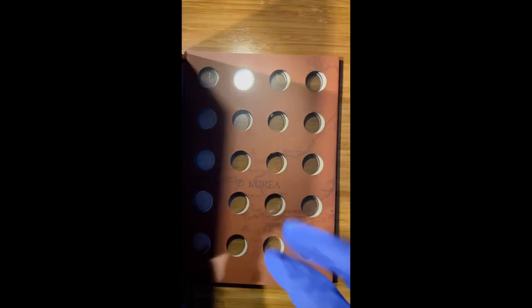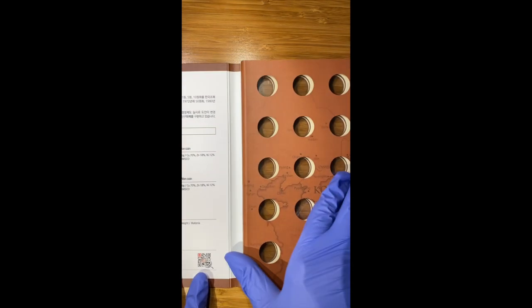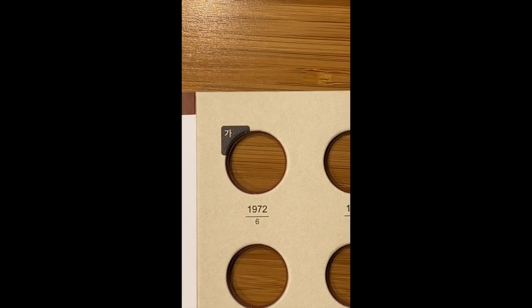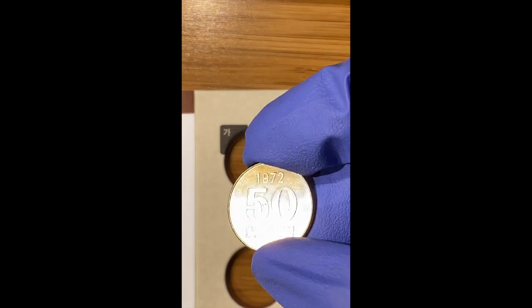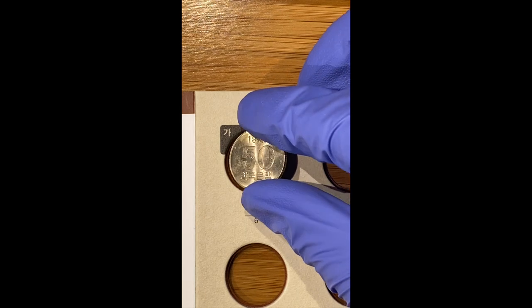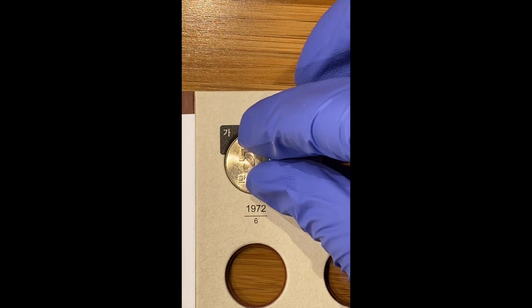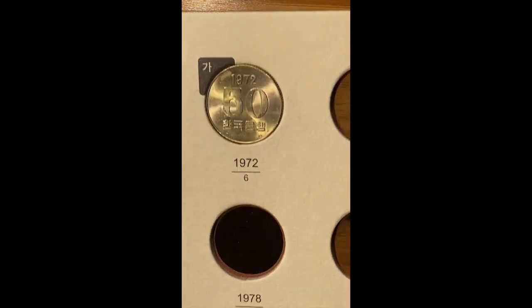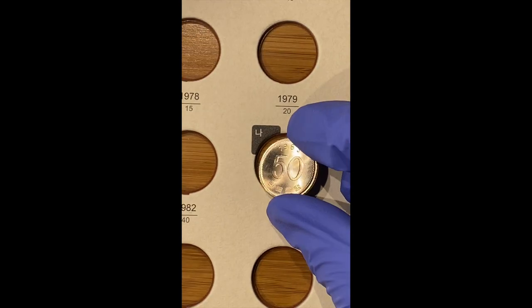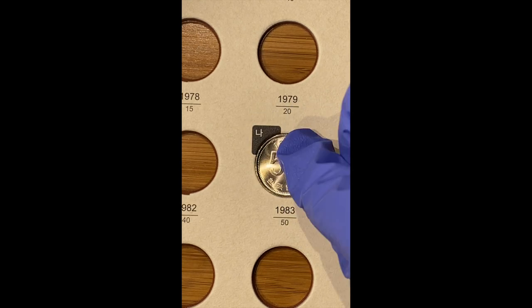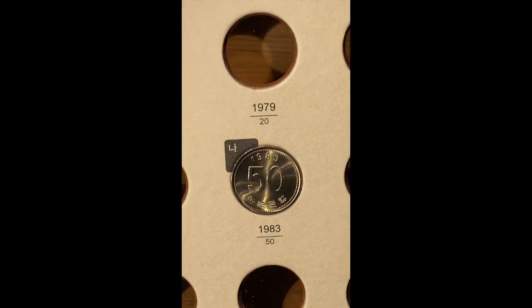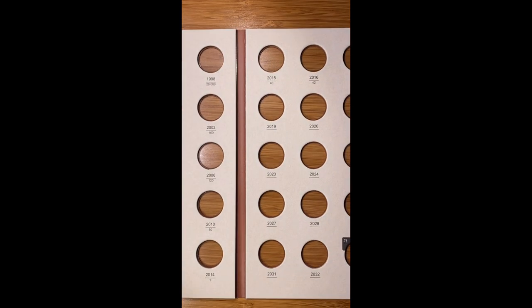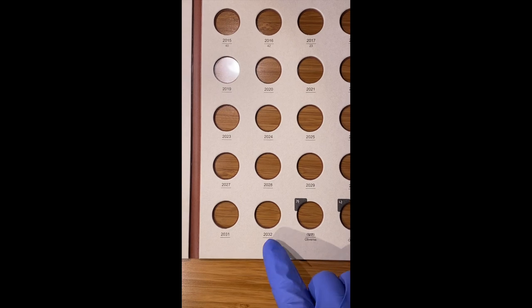Onto the fifty-won folder. The fifty-won folder shows the two versions of that coin, the Series one and Series two. Let's fit a 1972 fifty-won coin in its hole to check the fit. And the second Series fifty-won coin, starting in 1983. The fifty-won folder has holes that go up to 2032, and the extra holes at the very end here are for both Series obverses, as you see here on the right.